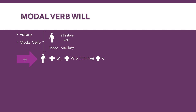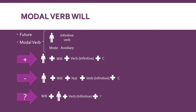In the case of the negative sentence, we're going to start with our pronoun, next will, next the word not because it is a negative sentence, next the verb in the infinitive form, and finally the complement. And finally the interrogative sentence — in this case we're going to start with our modal verb will, next the pronoun, next the verb in infinitive form, the complement, and finally the question mark.